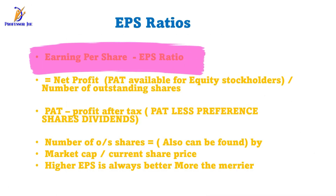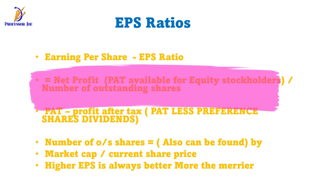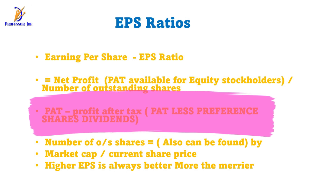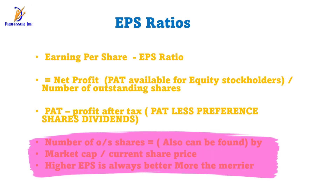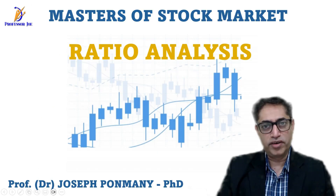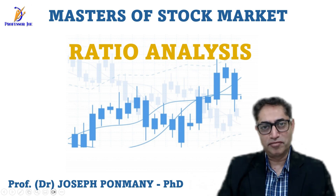The formula for EPS is: EPS = Net Profit available for equity shareholders divided by number of outstanding shares. PAT is profit after tax, less whatever dividend has to be paid to preference shareholders, since that is not available for equity shareholders. Another way to find the number of shares is: market capitalization divided by current market price. Profit after tax is available in balance sheets and many websites.